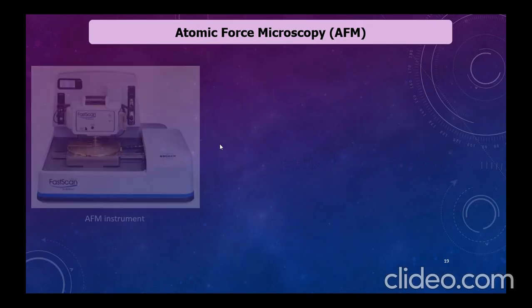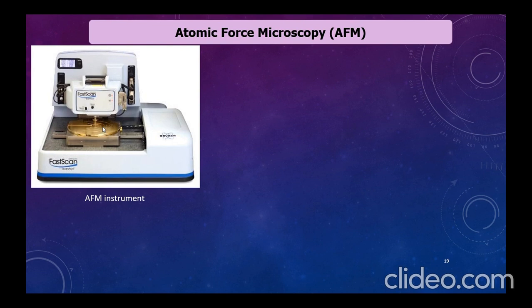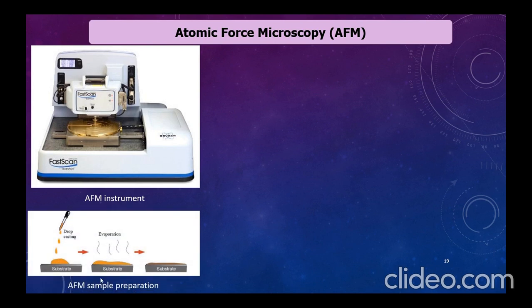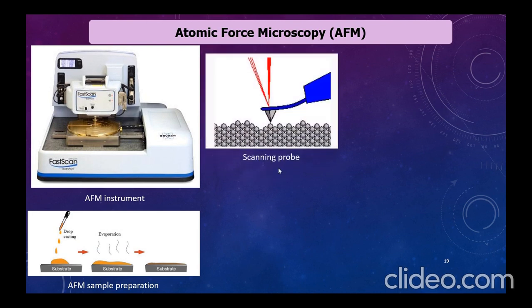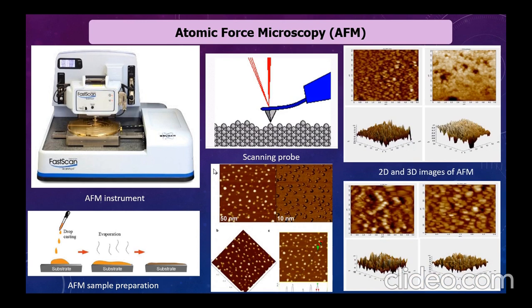AFM (atomic force microscopy) provides high-resolution topographical and surface property information by scanning a sharp probe over the sample surface while measuring forces between the probe and sample. A tip attached to a cantilever moves up and down in response to attractive or repulsive forces with the sample surface, and the cantilever movement is detected by a laser and photodetector. AFM provides 2D and 3D topographical images and can measure local mechanical properties such as stiffness, elasticity, and adhesion forces.